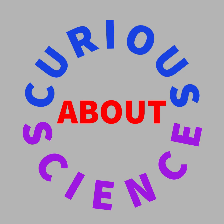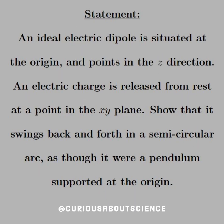All right, back again. So for this problem, we're going to tie together classical mechanics with the E&M world. The statement reads: an ideal electric dipole is situated at the origin and points in the Z direction. An electric charge is released from rest at a point in the XY plane. Show that it swings back and forth in a semicircular arc as though it were a pendulum supported at the origin.